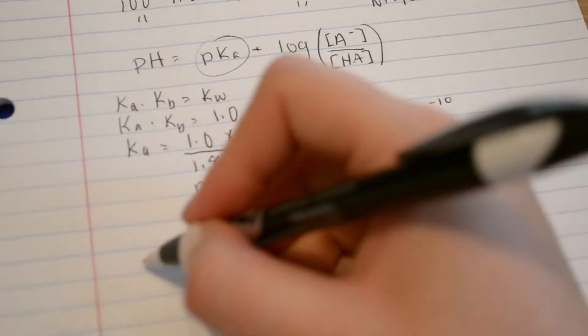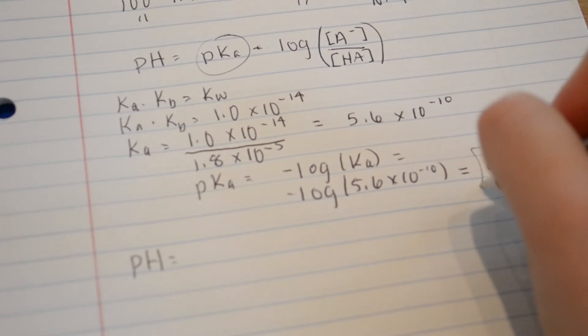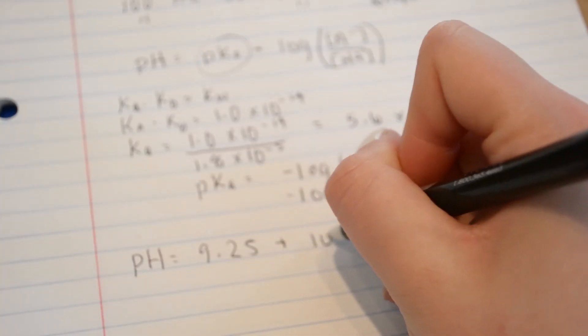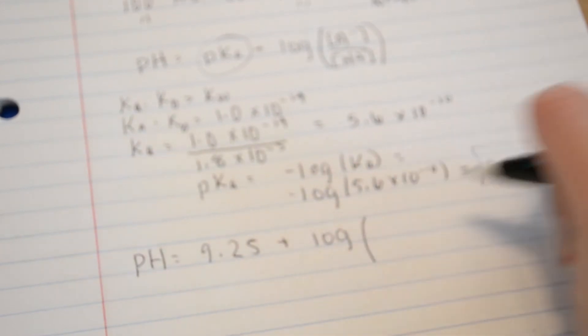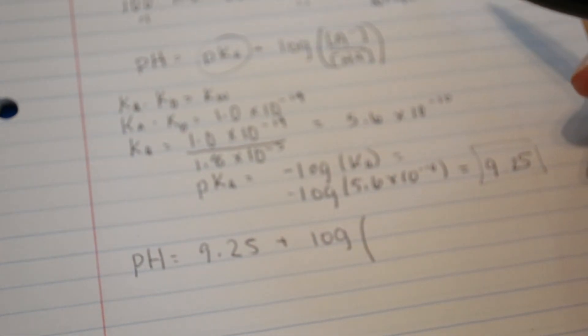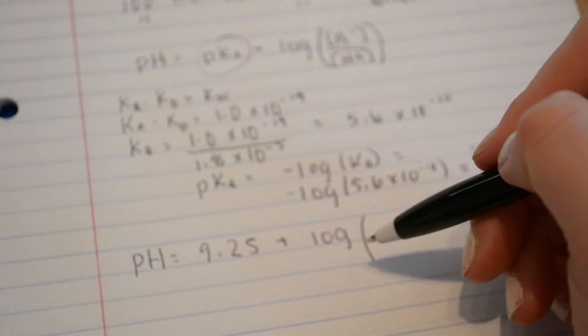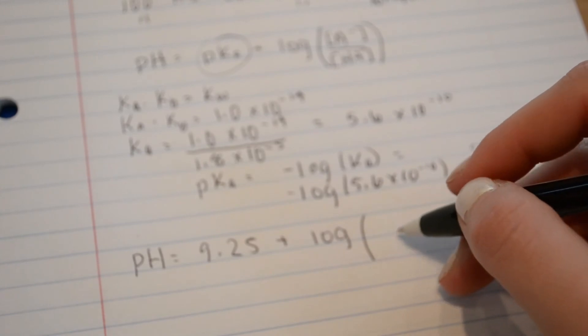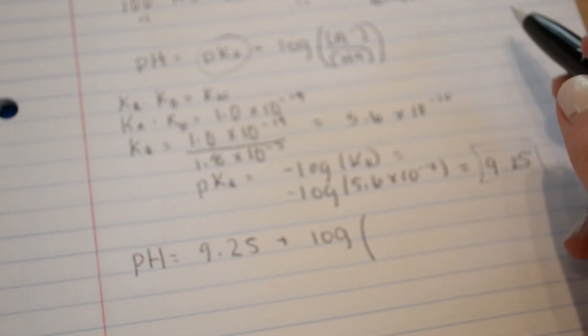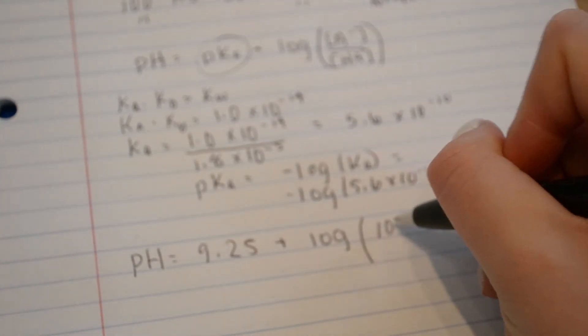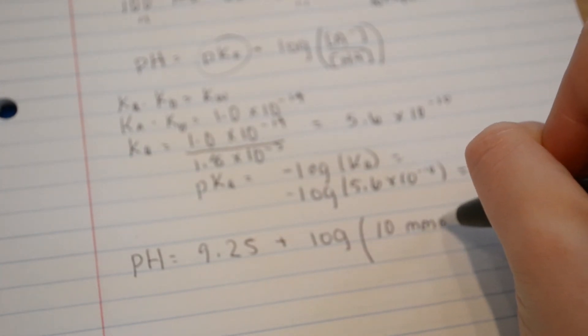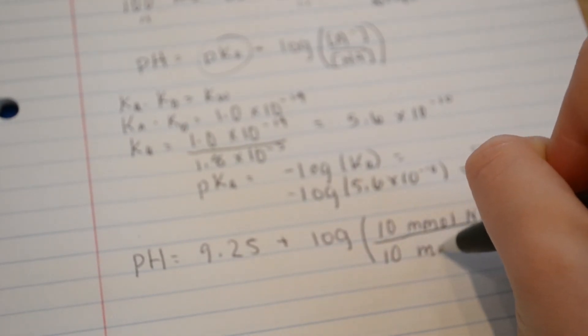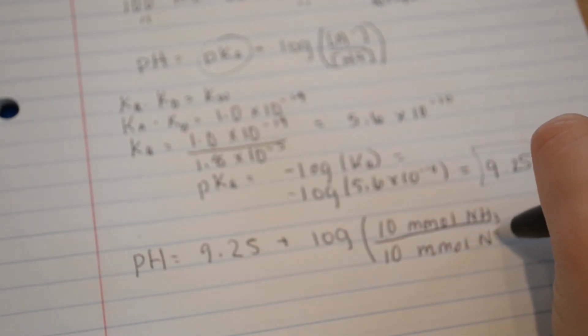To find pH, we'll plug in the KA, 9.25 plus log of the concentration of the base over the acid. And we'll also use the moles of each since it's just a ratio. So the moles from above what we calculated was 10 millimoles of NH3, which is the base, and over 10 millimoles of NH4Cl.